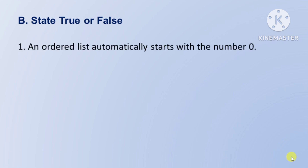See, State true or false. First question: an ordered list automatically starts with the number zero — ek ordered list automatic rup se zero number se start hoti hai. Toh yeh false hai, kyunki yeh number one se start hoti hai.